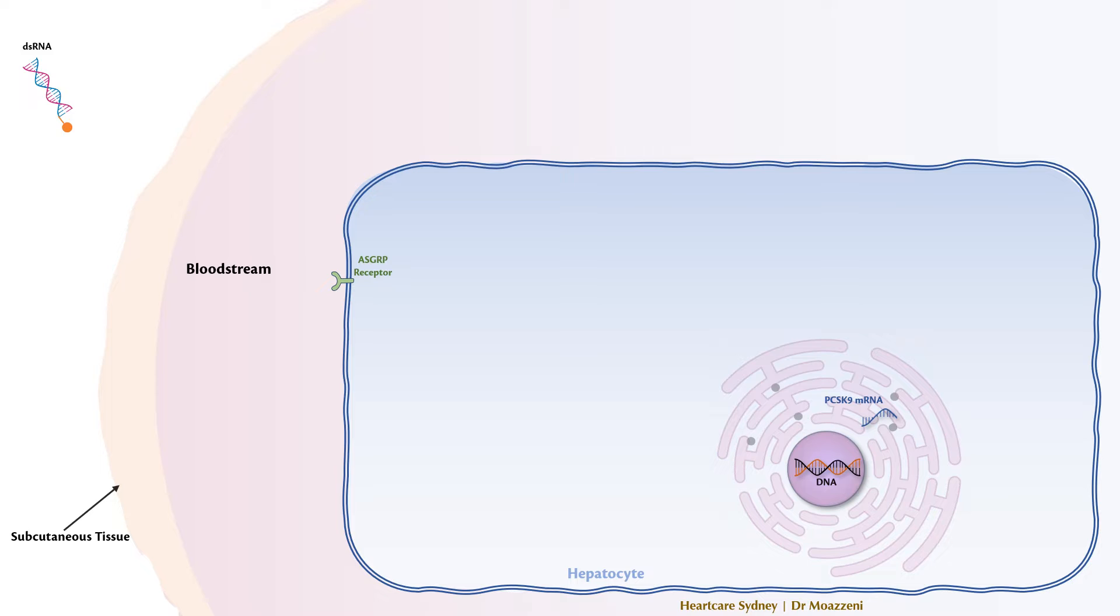After subcutaneous injection of the double-strand RNA, it enters the bloodstream and attaches to ASGRP receptors on the liver cells. Once attached, the complex undergoes endocytosis and is internalized. Inside the endosome, the receptor is recycled, GALNAC is degraded, and the double-strand RNA is released into the cytoplasm.